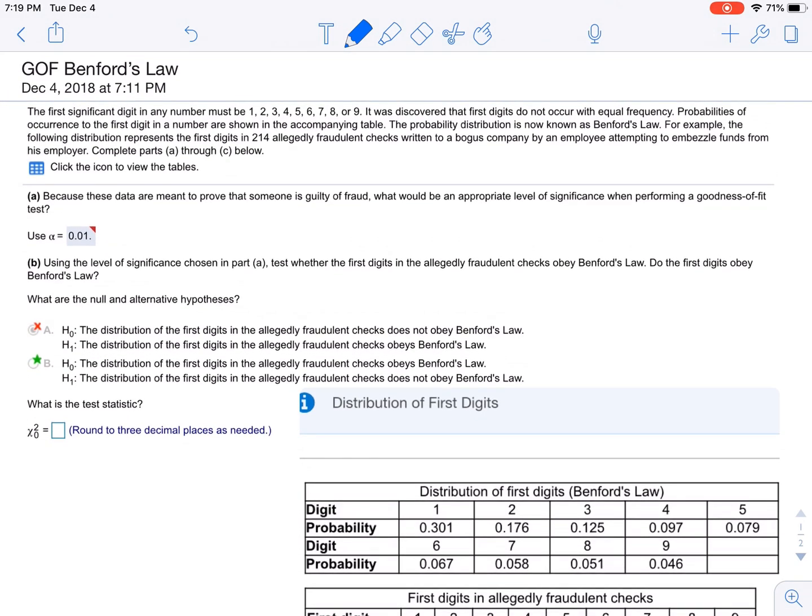Okay, so here we have a goodness of fit question. Let's read it. The first significant digit in any number must be one through nine. It was discovered that first digits do not occur with equal frequency.